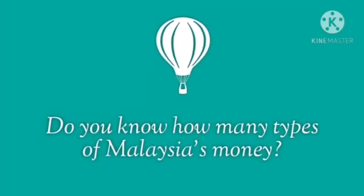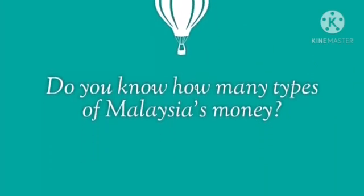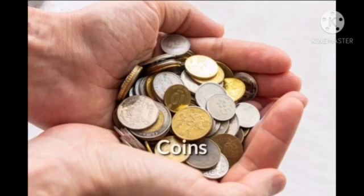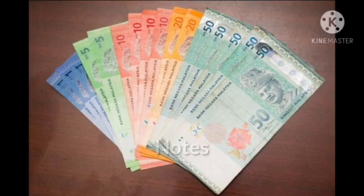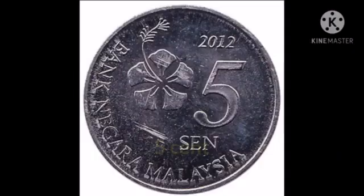Do you know how many types of money? We have two types. First, we have coins. The other one is notes. These are notes. Okay, let's see what are the coins.